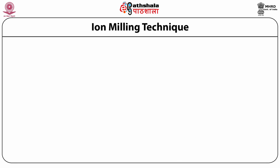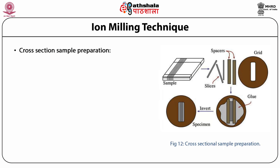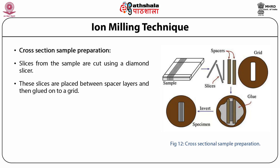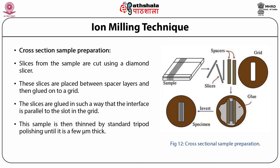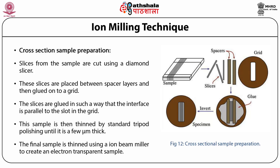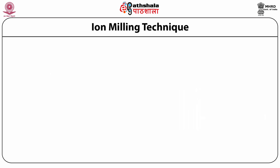The third technique is cross-section sample preparation. Slices are cut from the sample using a diamond slicer, placed between spacer layers, and glued onto a grid such that the interface is parallel to the slot in the grid. The sample is then thinned by standard tripod polishing until it is a few microns thick, and the final thinning is done by an ion beam miller to create an electron-transparent sample.